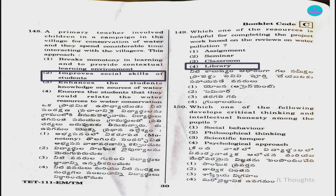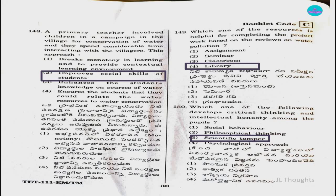Question number 150: Which one of the following develops critical thinking and intellectual honesty among pupils? Options: social behavior, philosophical thinking, scientific temper, or psychological approach. The answer is option three, scientific temper. With this, we have completed all 30 questions of EVS, that is Environmental Science. Thank you.